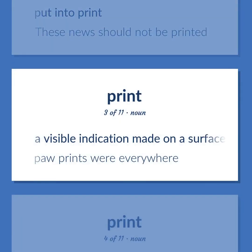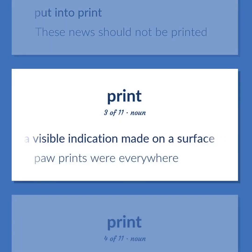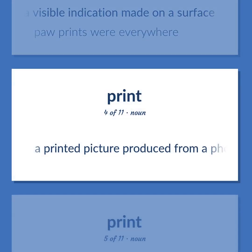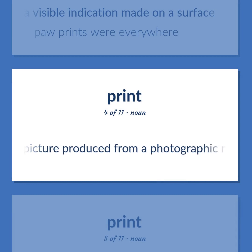A visible indication made on a surface. Paw prints were everywhere. A printed picture produced from a photographic negative.